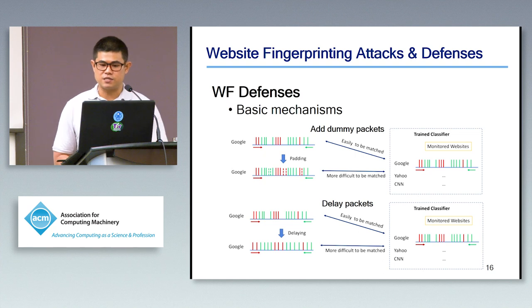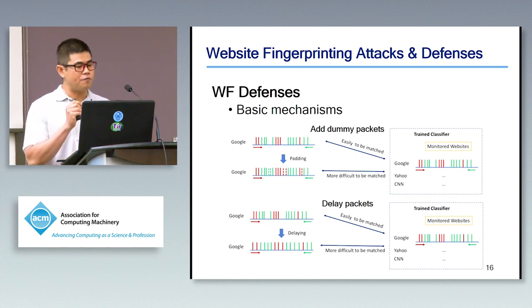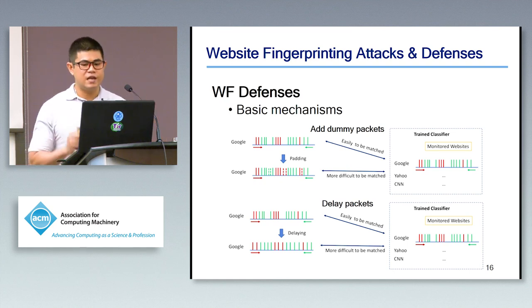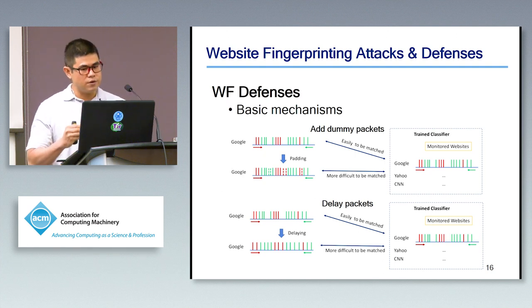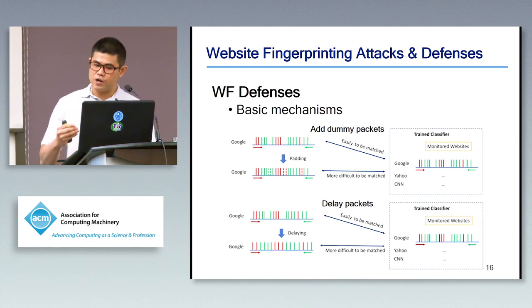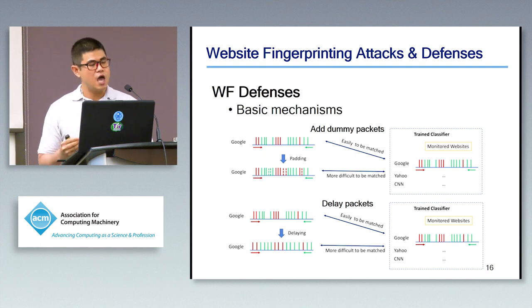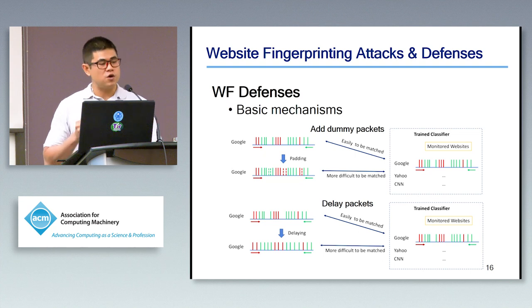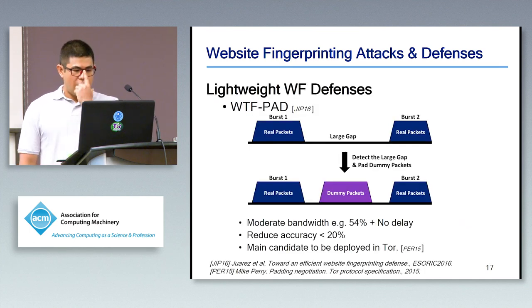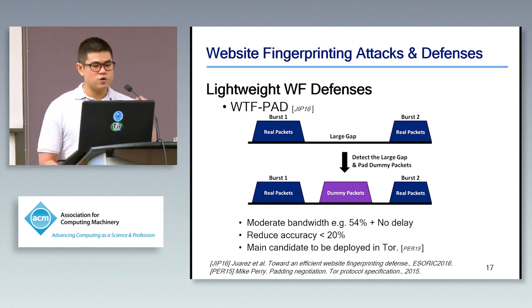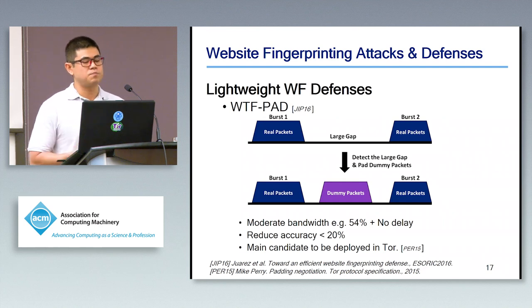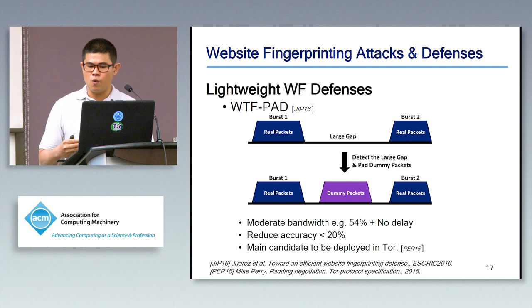In response to these effective attacks, website fingerprinting defenses have been proposed. The basic mechanism is to add dummy packets and/or delay packets to confuse the classifier. However, a key factor that must be considered is overhead — these mechanisms must not add unacceptable bandwidth overhead and, more importantly, latency overhead, which is a direct cost to the user in the Tor system that is already slower than regular browsing. The first lightweight defense is WTF-PAD by Juarez et al., which detects large gaps between bursts and pads dummy packets to distort the burst pattern, requiring only moderate bandwidth overhead with no additional delay.